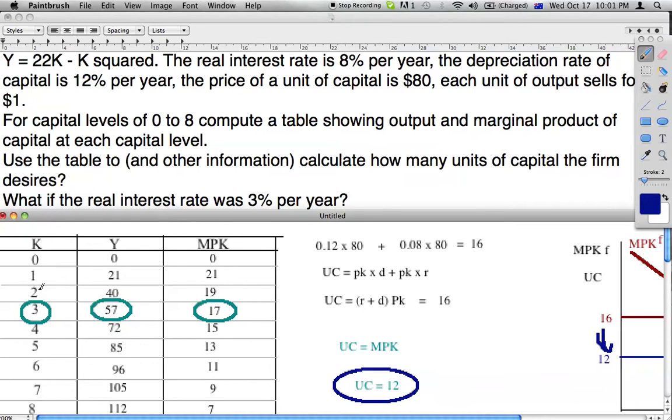When user cost of capital equals MPK and our user cost is 12, we will continue producing until we get 5 units of capital. If we go from 5 to 6 we will lose out because the benefit will be less than the cost. So the answer is 5. If the real interest rate was 3%, we would get 5 units of capital.